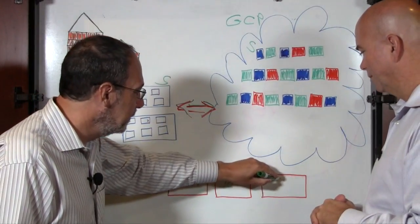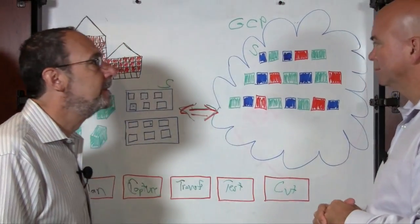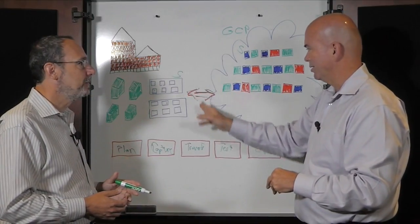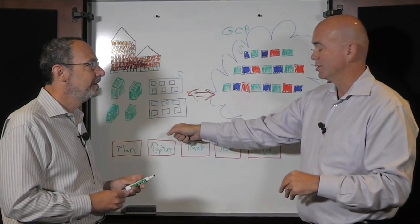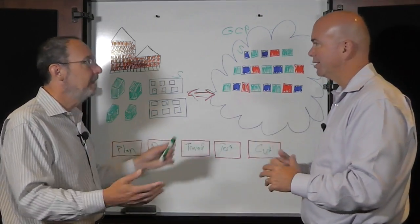And then, finally, you do the cutover. And that's, if it's a migration, that you sever this link and you're running there permanently or in a disaster, your building's gone or whatever, and then you're ready to go there. That's exactly right.